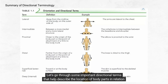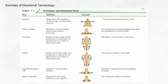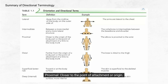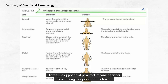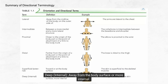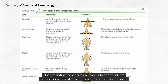Let's go through some important directional terms that help describe the location of body parts in relation to each other. Lateral means away from the midline — the arms are lateral to the chest. Intermediate refers to being between a more medial and a more lateral structure — the collarbone is intermediate between the breastbone and the shoulder. Proximal means closer to the point of attachment — the elbow is proximal to the wrist. Distal is the opposite, meaning farther from the origin — the knee is distal to the thigh. Superficial or external means toward or at the body surface — the skin is superficial to the skeletal muscles. Deep or internal means away from the body surface — the lungs are deep to the skin. Understanding these terms allows us to communicate precise locations of structures and movements in a medical context.